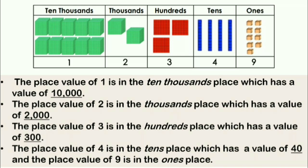In relation to this, we can also determine the place value and value of each digit. The place value of 1 is in the ten thousands place, which has a value of 10,000. The place value of 2 is in the thousands place, which has a value of 2,000. The place value of 3 is in the hundreds place, which has a value of 300. The place value of 4 is in the tens place, which has a value of 40. And the place value of 9 is in the ones place.